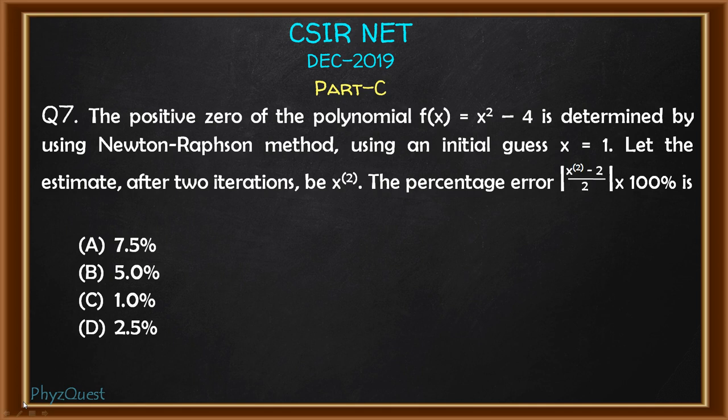We need to find out the percentage error: modulus of (x2 - 2)/2 × 100. This is what we need to calculate. Four options are given and we need to choose the correct option.